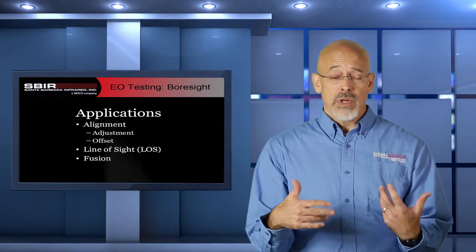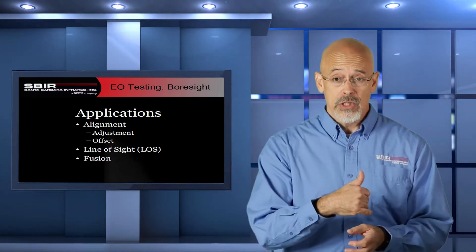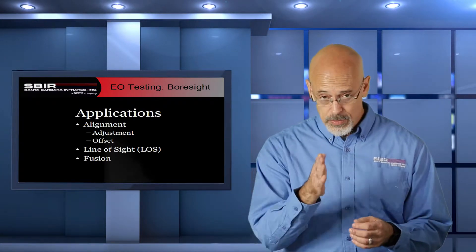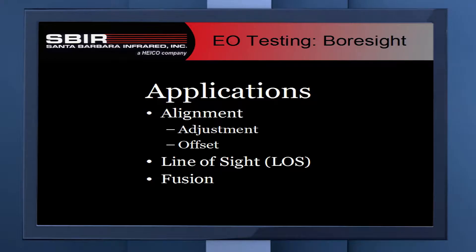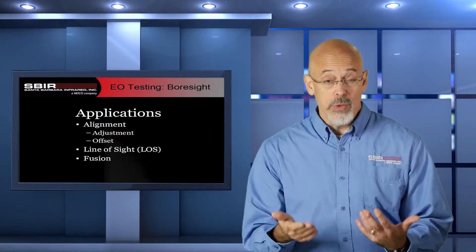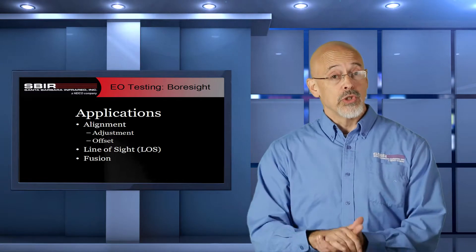This test gets applied different ways. One of the first is when you're actually making sure that the camera is properly aligned to your test system, your optical system. You can make adjustments, ensuring that the camera is looking down the primary optical axis. Another important use of this test is to make sure that your weapon system is properly aligned — that the sight, or the sensor, is pointing the weapon where you expect it to be.